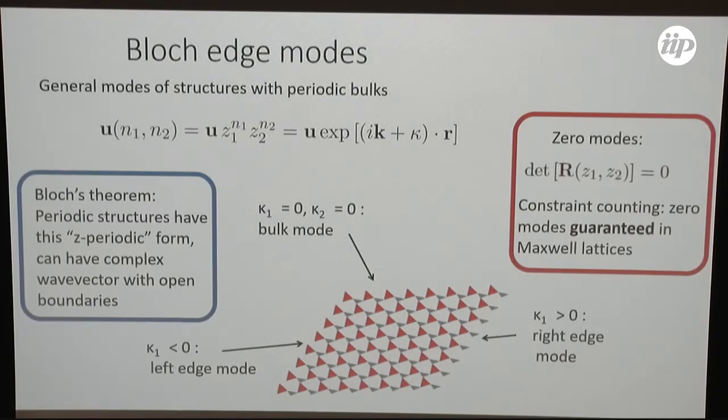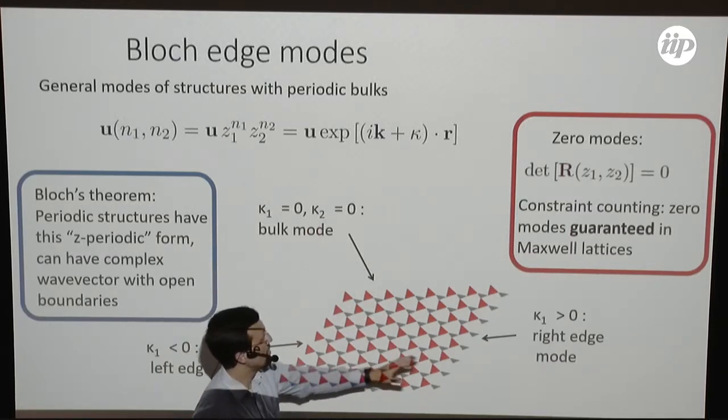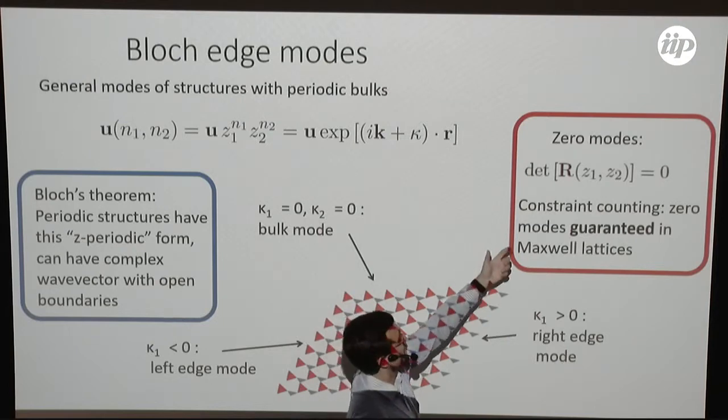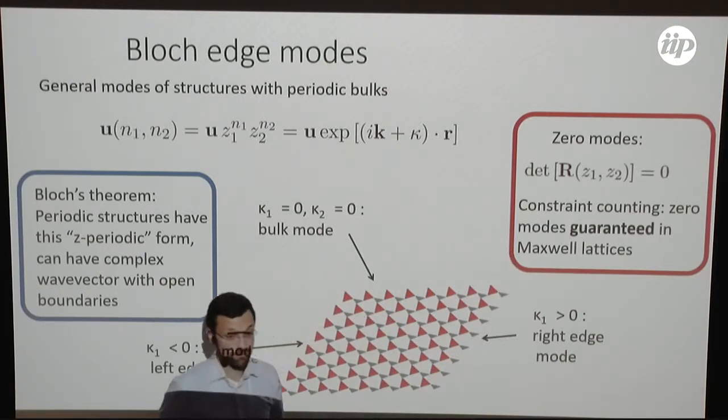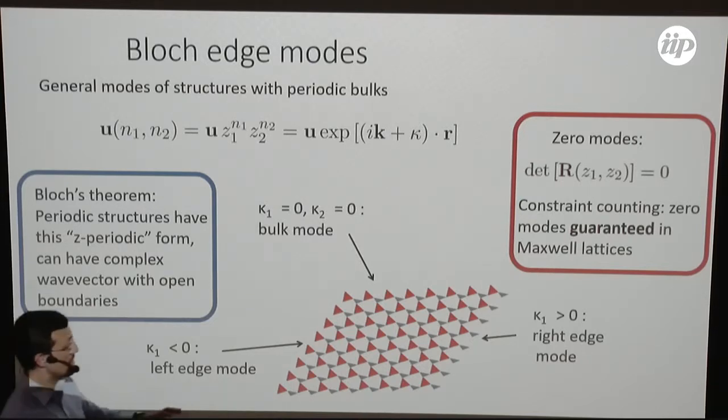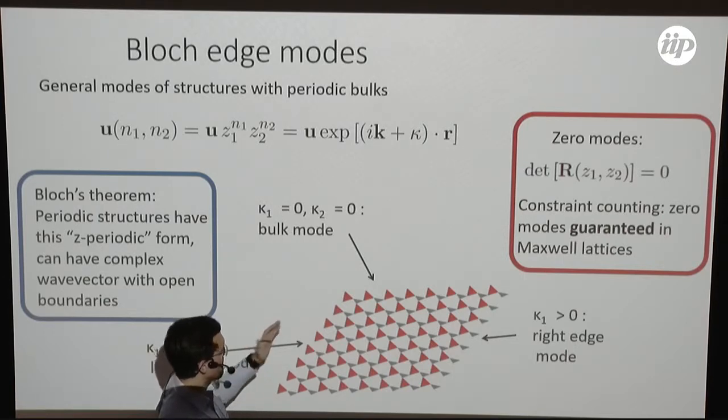We can have modes that, depending on the value of this complex number, this e to the ik, they're either in the bulk, they're on the right edge, or they're on the left edge. In particular, for what we call a Maxwell lattice, which is a lattice that has the same number of constraints as degrees of freedom, that means our rigidity matrix is a square matrix. And we can look for zero modes just by taking the determinant. If we express our rigidity matrix mathematically as a function of these Z1 and Z2 complex numbers, if I fix one of them, so I just have one left, then I'm always going to have solutions. This is just an algebraic equation. Fundamental theorem of algebra says that I'll have some solutions in the complex plane. And since they're anywhere in the complex plane, I'm not guaranteed that they're bulk solutions. They won't show up with periodic boundary conditions. But if I cut this out so that I have edge modes, then I'm going to be guaranteed to have them on one edge or another.